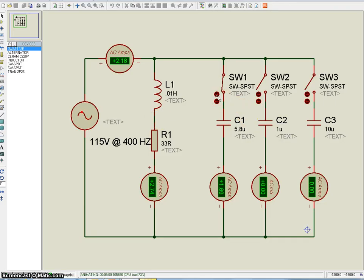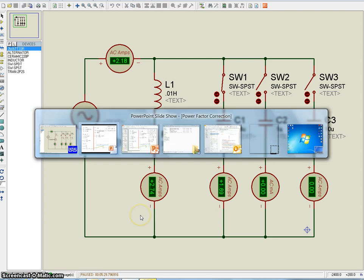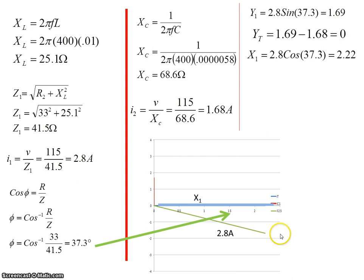So if I close the switch, I'm down to roughly 2.2 amps. And I've just noticed that my capacitor value is 5.8 here and 6.8 in the calculation. So that might be what's causing the slight difference. But I hope you get the point. We've reduced the total current down to about 2.2 amps.